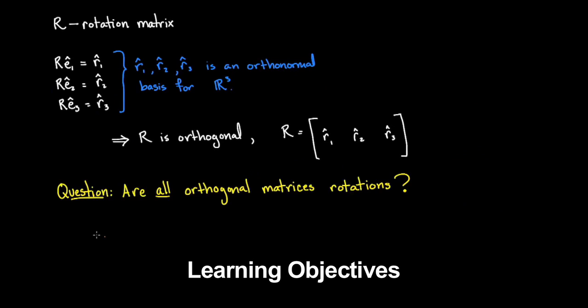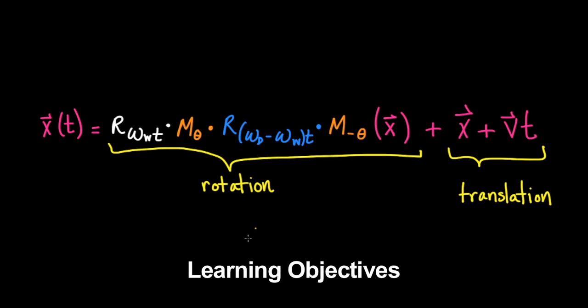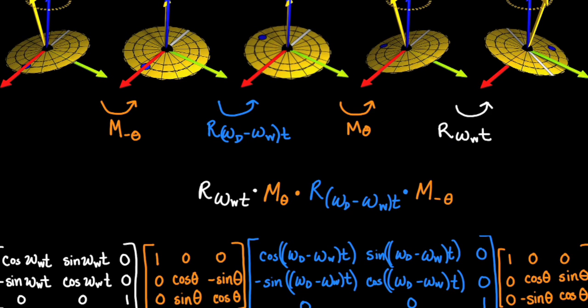After watching this video, you'll be able to identify rotation matrices, decompose the motion of the badly-thrown disc into translational and rotational components, and write the rotational motion of the disc as a product of rotation matrices.